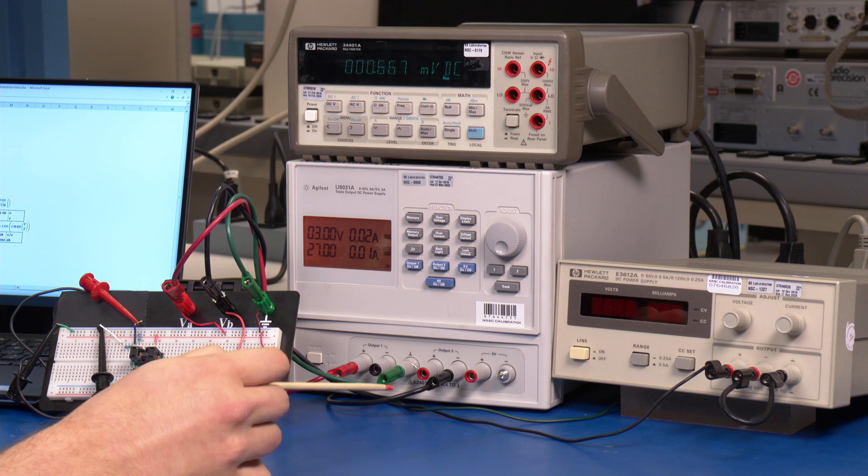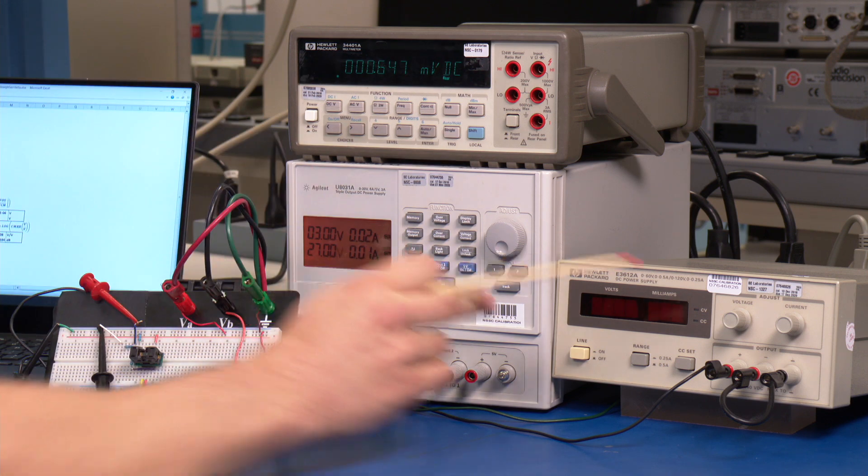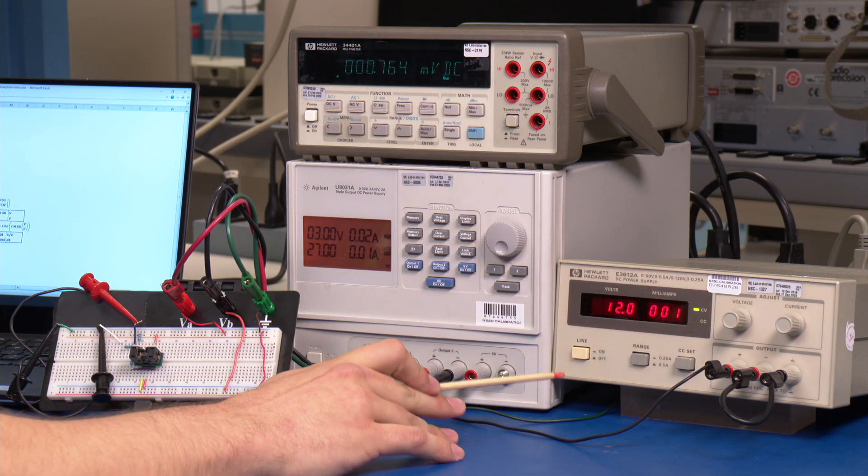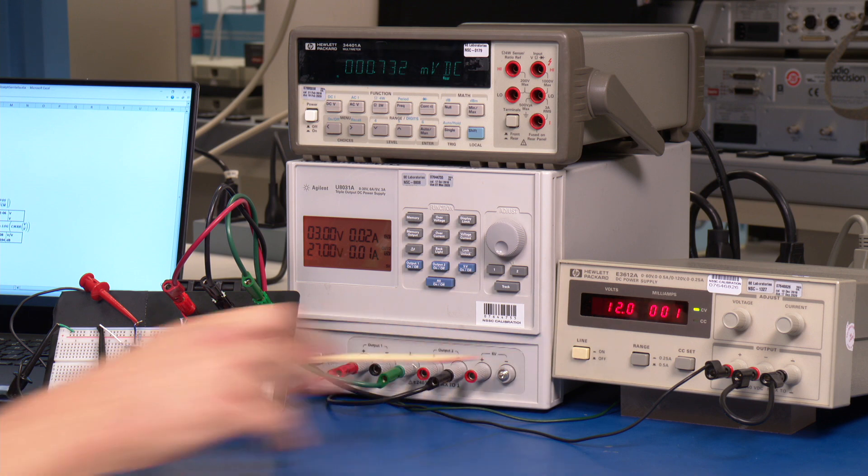Now that we've adjusted our power supplies, for the second offset condition, we see that the positive supply is at 3 volts, with the negative supply at negative 27 volts. Remember, the output must be at approximately mid-supply, in this case, negative 12 volts.